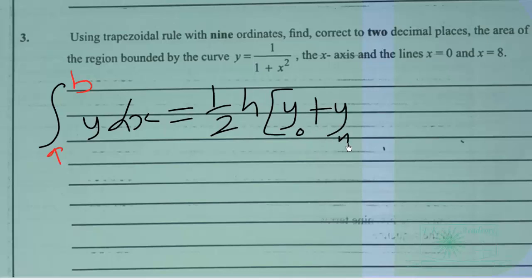Then we have plus 2 into brackets the remaining y values, so y1 plus y2 plus up to y sub n minus 1.